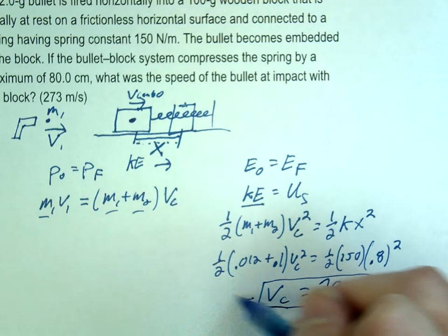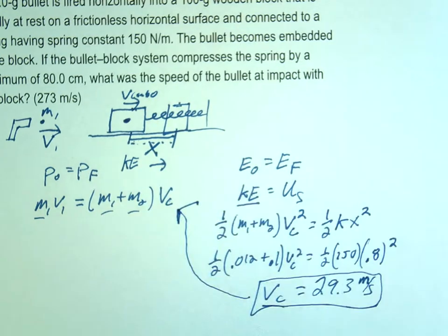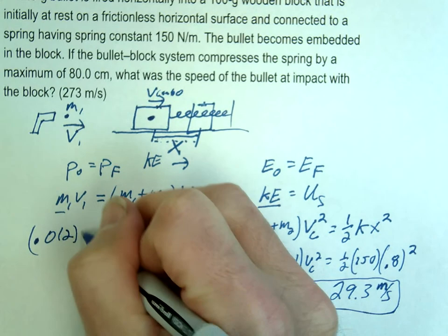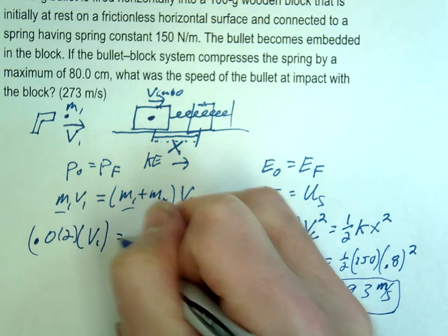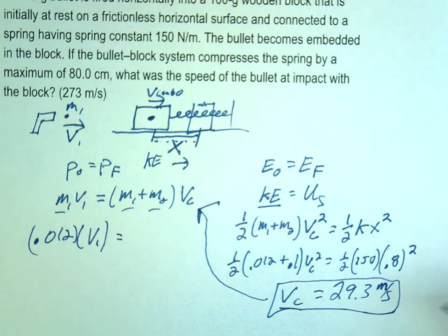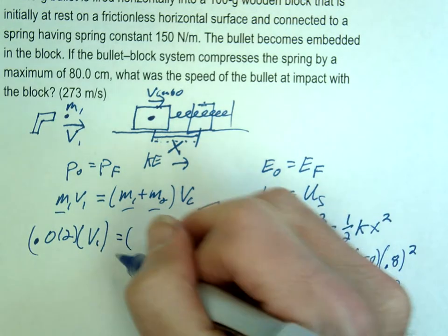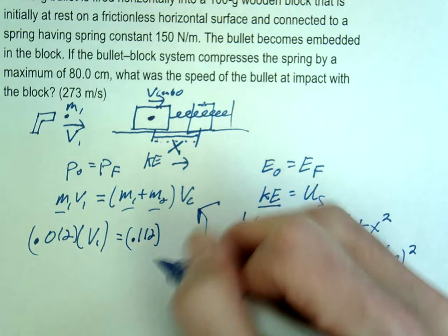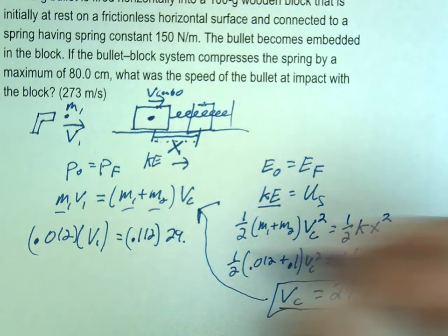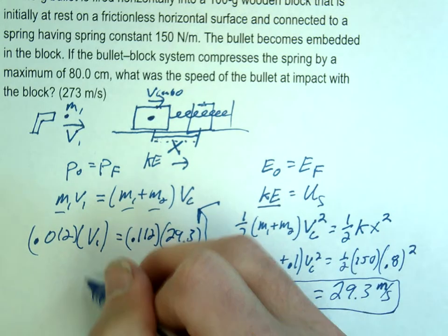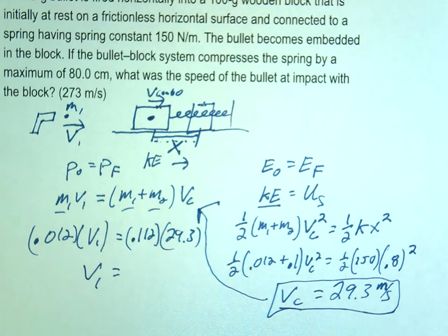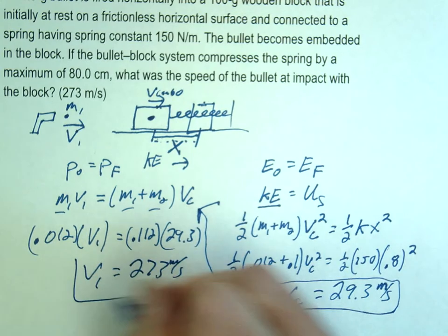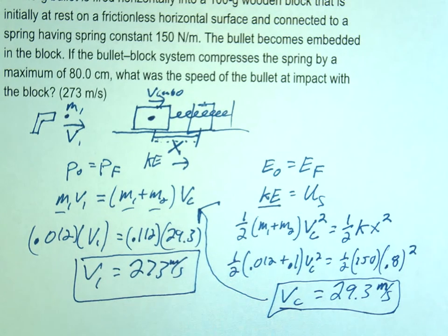And then we'll just throw that into here to solve for v initial. OK, so .012 v1 equals, again, that combo mass. So that's .112. I just combined those masses. And 29.3. 273, did I do my math right? Yes. Yes. Yes. That was pretty good.